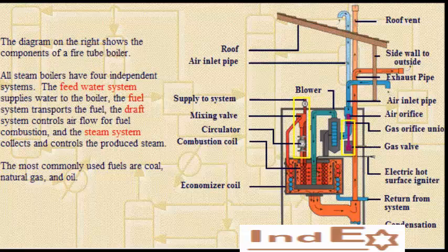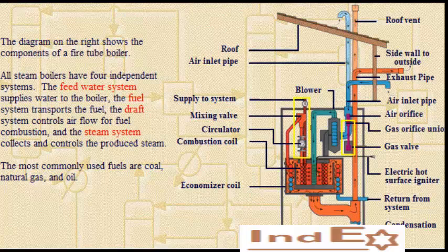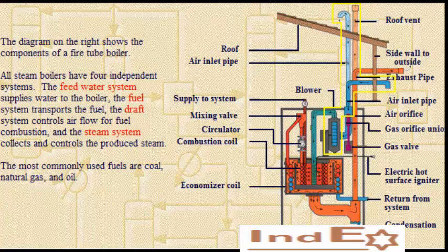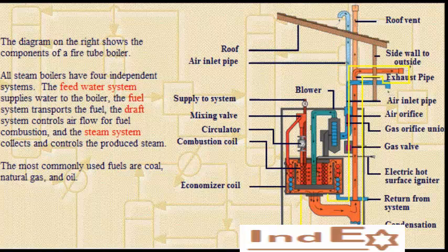All steam boilers have four independent systems. The feed water system supplies water to the boiler, the fuel system transports the fuel, the draft system controls air flow for fuel combustion, and the steam system collects and controls the produced steam.